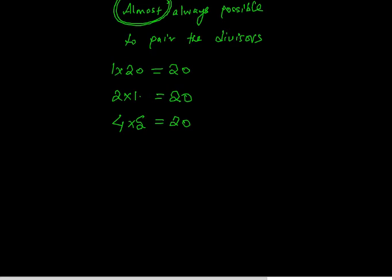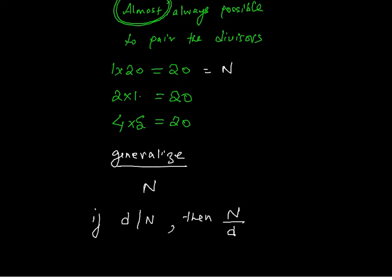Let's generalize. If n is the number that we are working with, so in the previous example n was 20, let's take any divisor d of n. If d divides n, then clearly n by d is also a divisor of n.